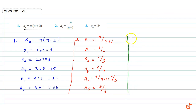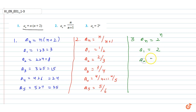The third question is when a_n = 2^n. So a_1 = 2, a_2 = 2² = 4, and a_3 = 2³ = 8.